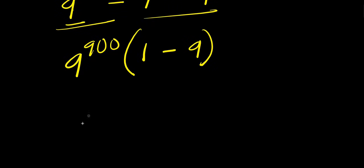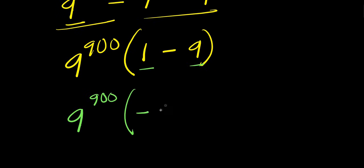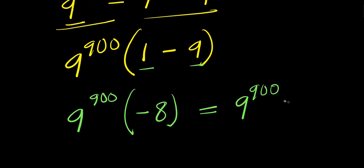So from here, we have 9^900 times negative 8. We are going to express this as 9^900 times 8 times negative 1.